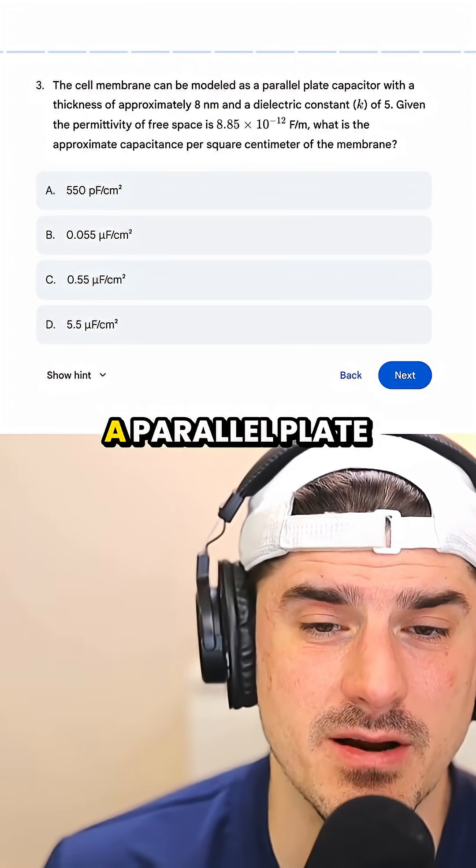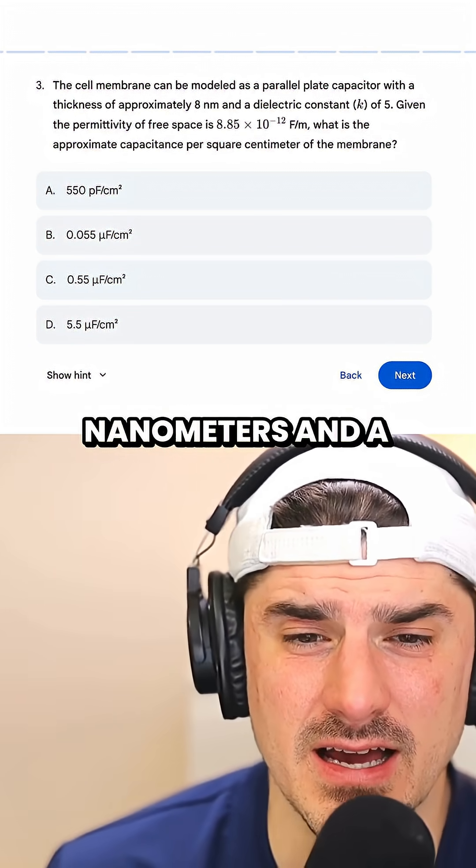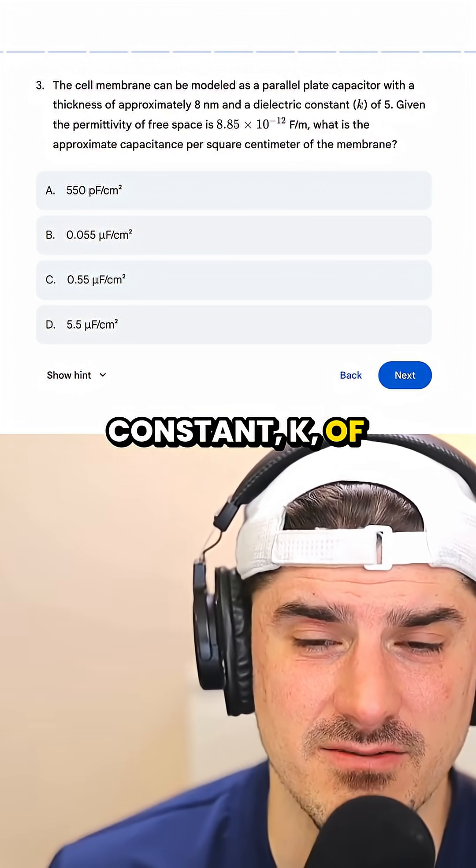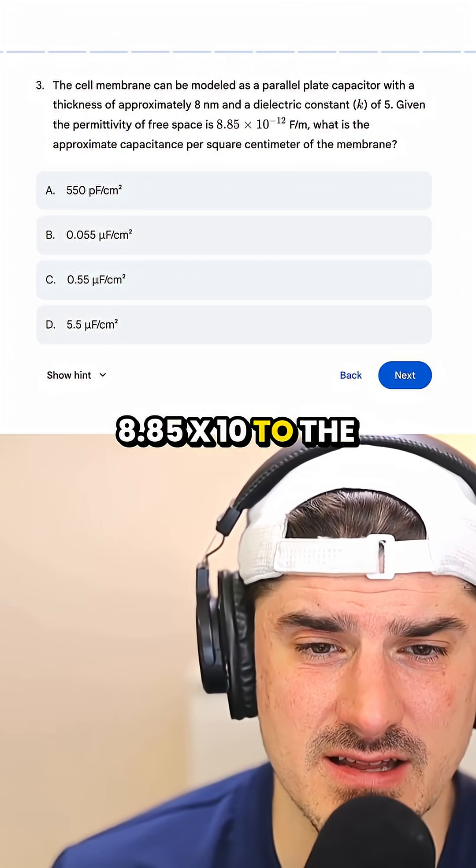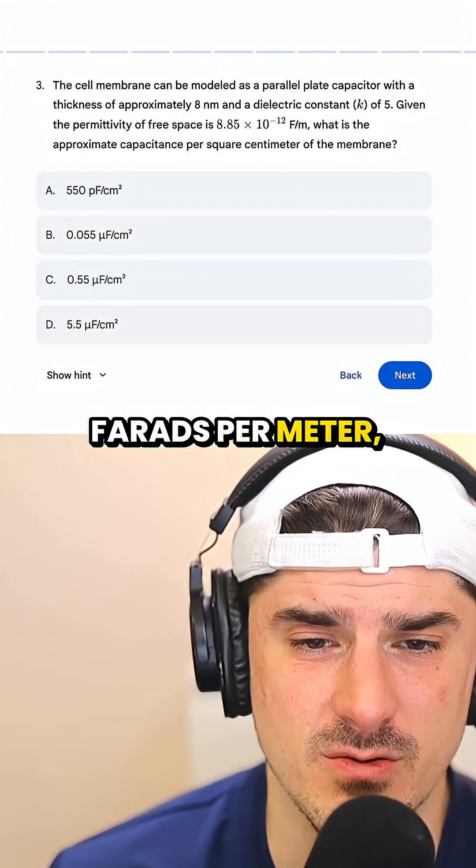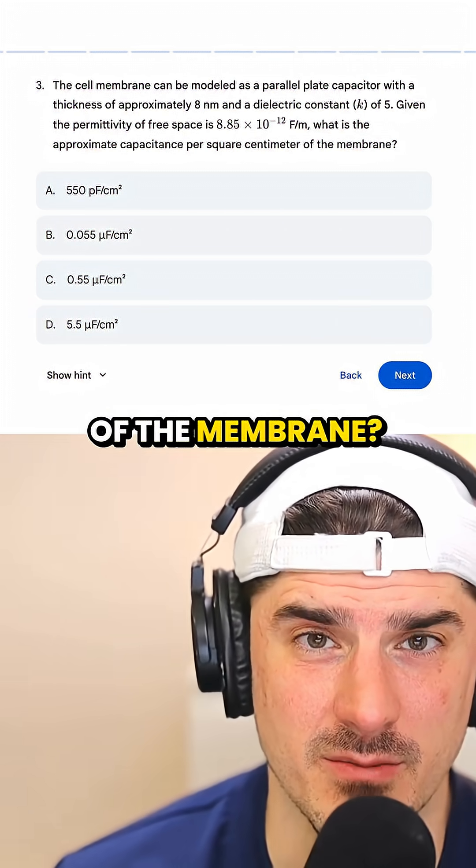The cell membrane can be modeled as a parallel plate capacitor with a thickness of approximately 8 nanometers and a dielectric constant k of 5. Given the permittivity of free space is 8.85 × 10^-12 farads per meter, what is the approximate capacitance per square centimeter of the membrane? Now,